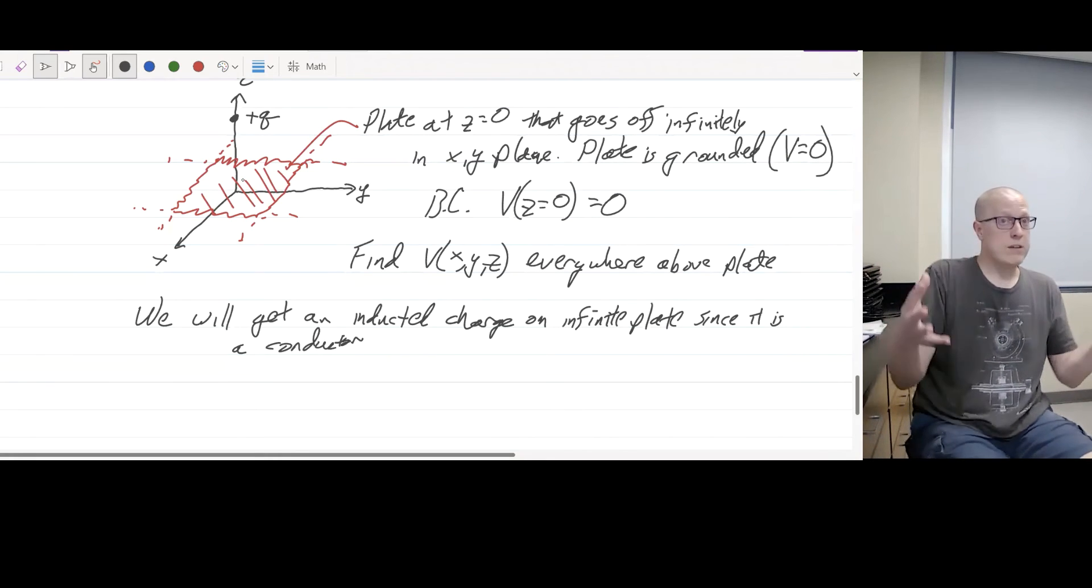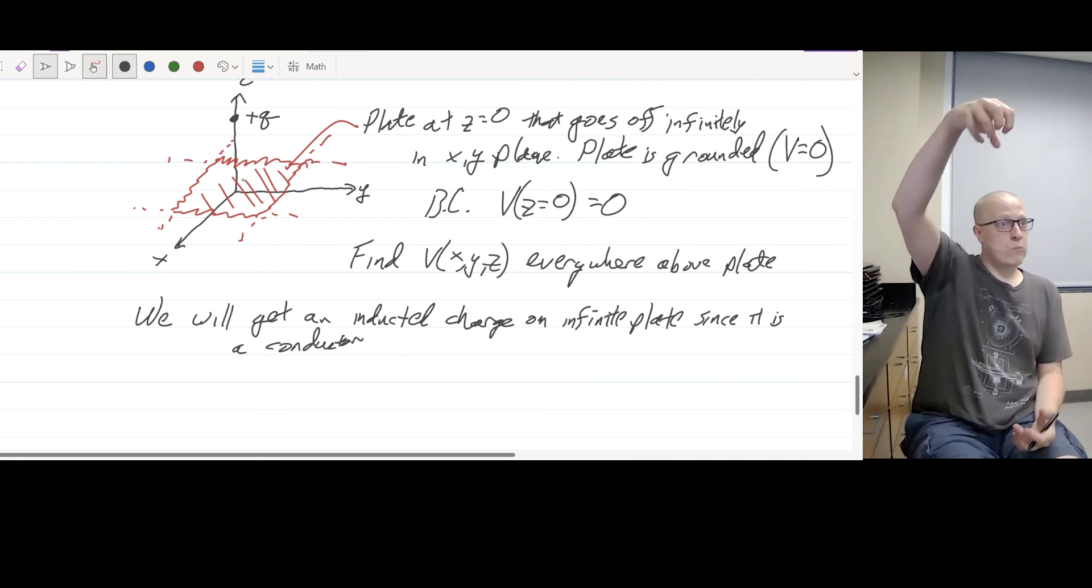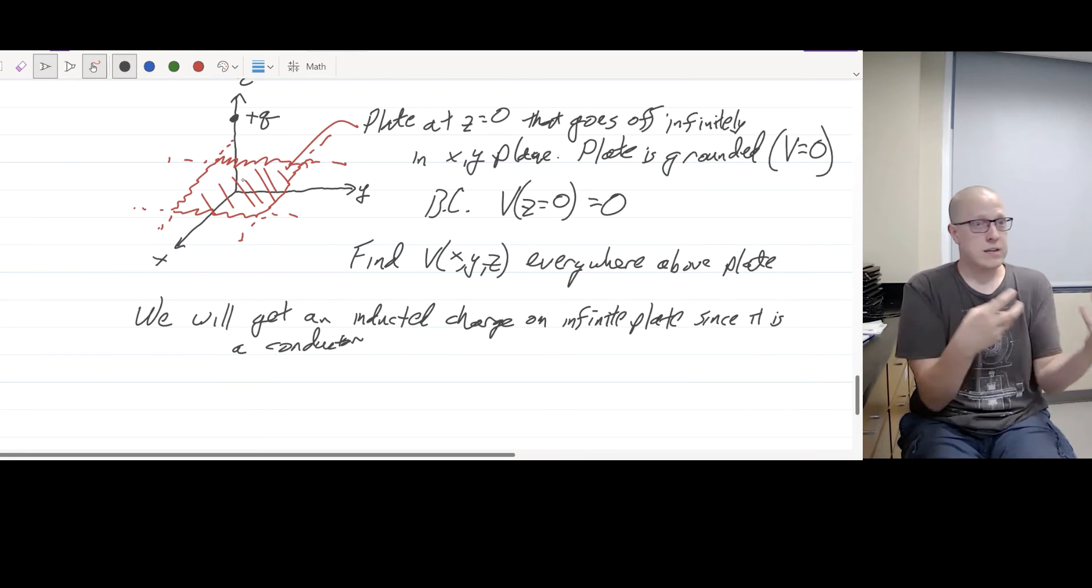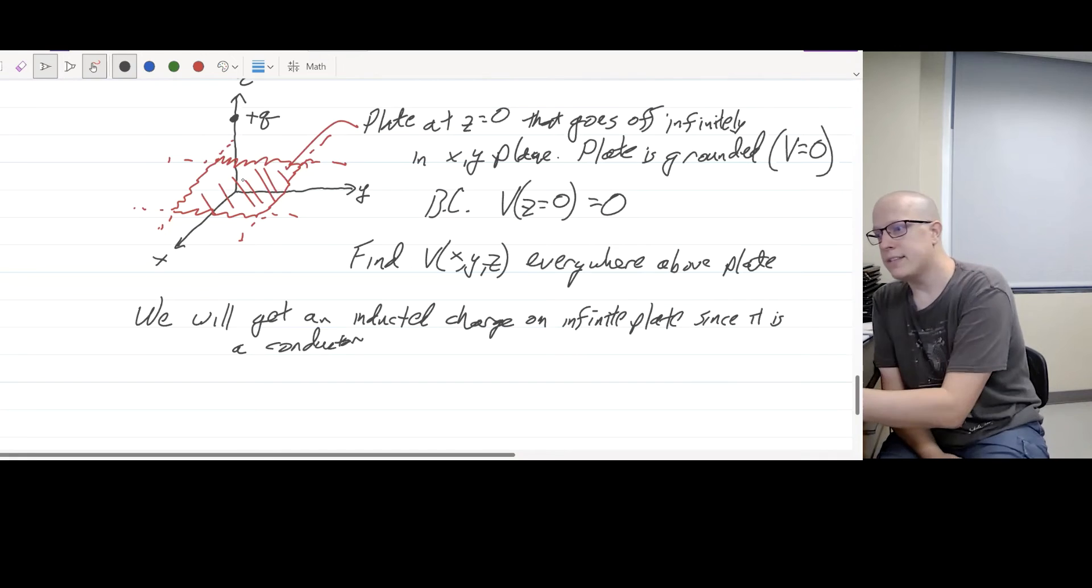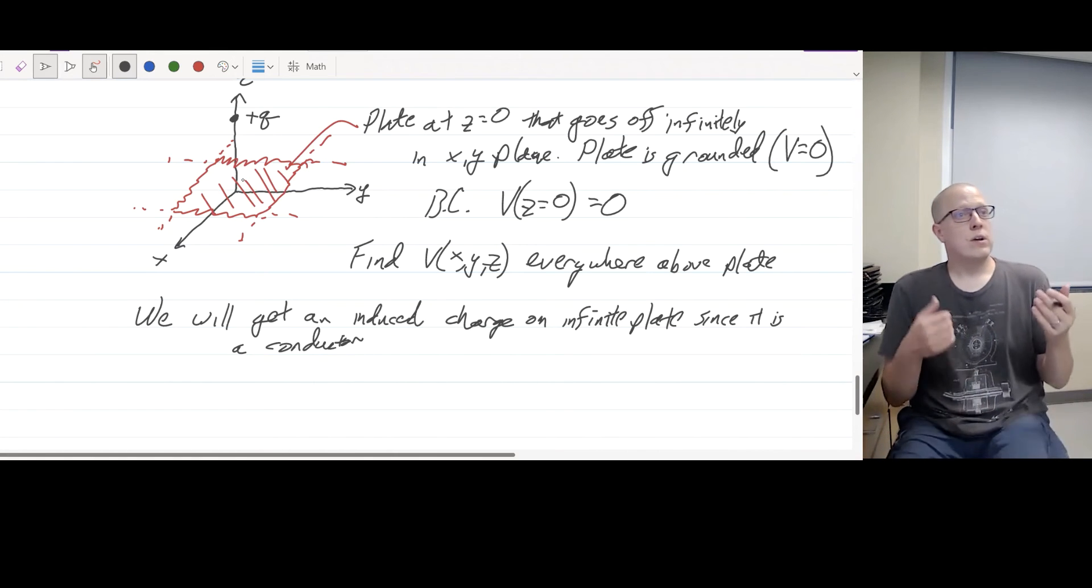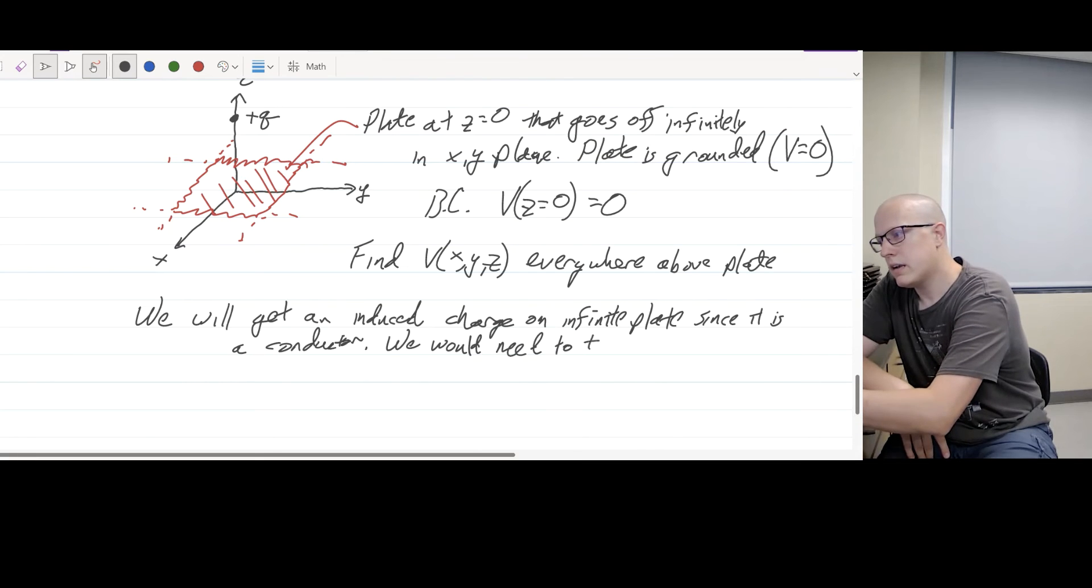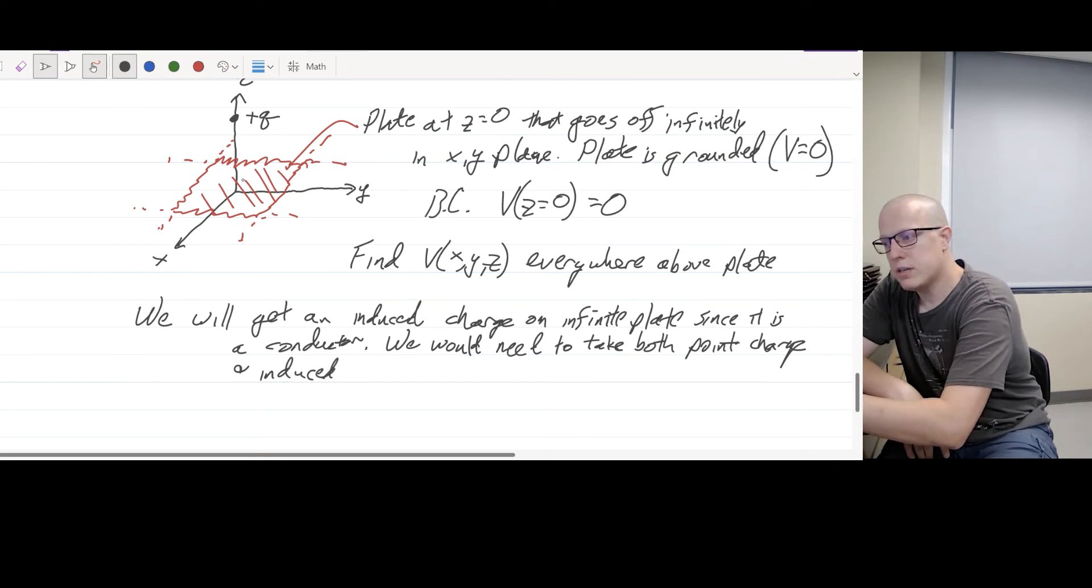Conductors are materials where the potential is the same everywhere. And in this case, the potential is zero everywhere. So we know that it's a conductor. And I know anytime we bring a charge near a conductor, that's going to cause all of the other charges in the conductor to move themselves around in a way that will make, in this case, be equal to zero. So we're going to get an induced charge. And so the potential is not just due to the point charge plus Q. It's also due to this induced charge. So we would need to take both into account. Both the point charge and the induced charge into account.